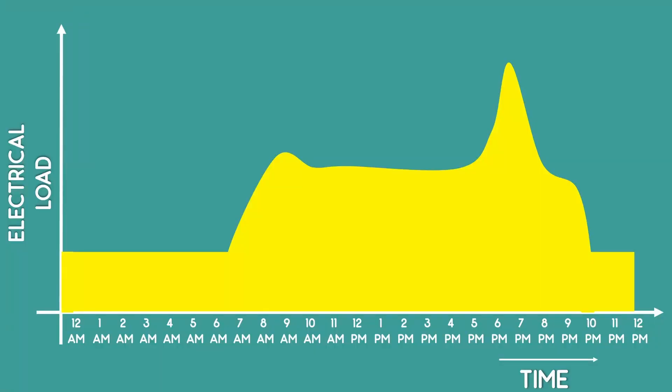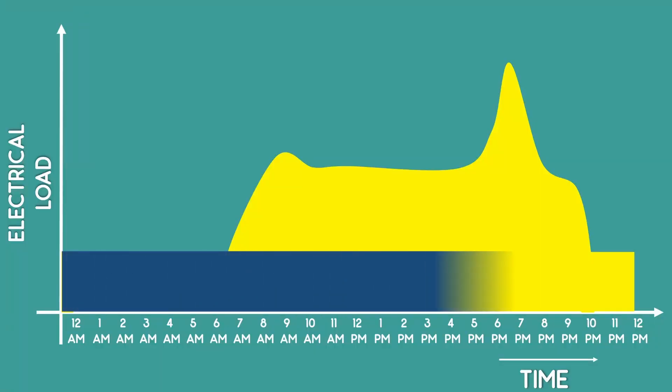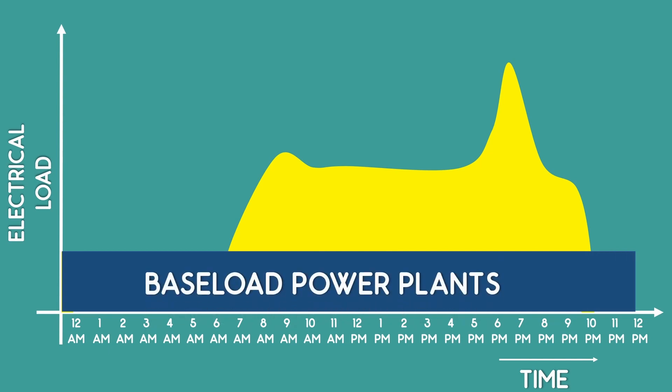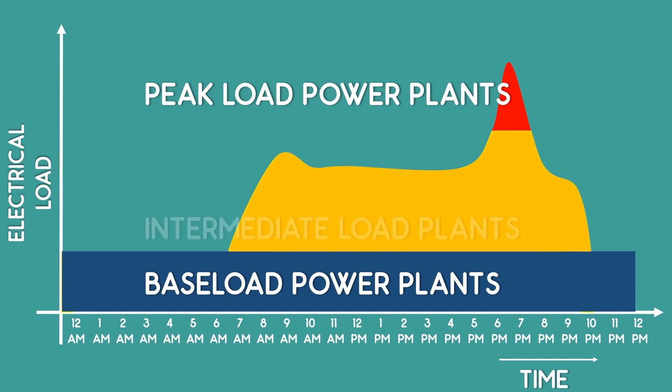The power plants that are used to meet the base load demand are called the base load power plants. And those that meet the peak load demand are called peak load power plants. Power plants that are used during the transition between the base load and peak load demand are called intermediate load plants.